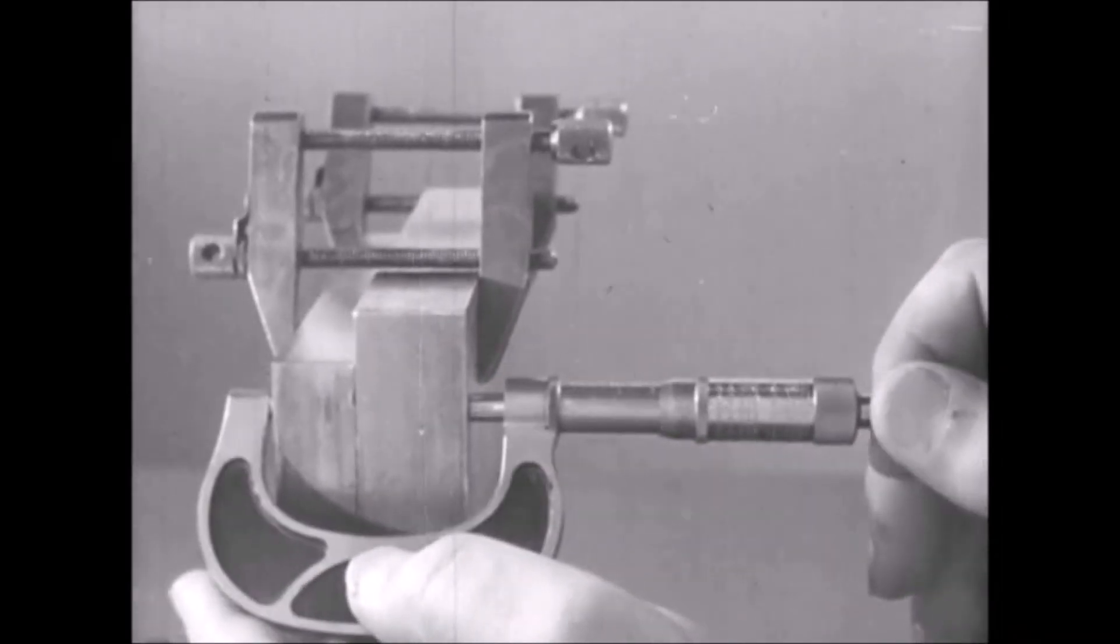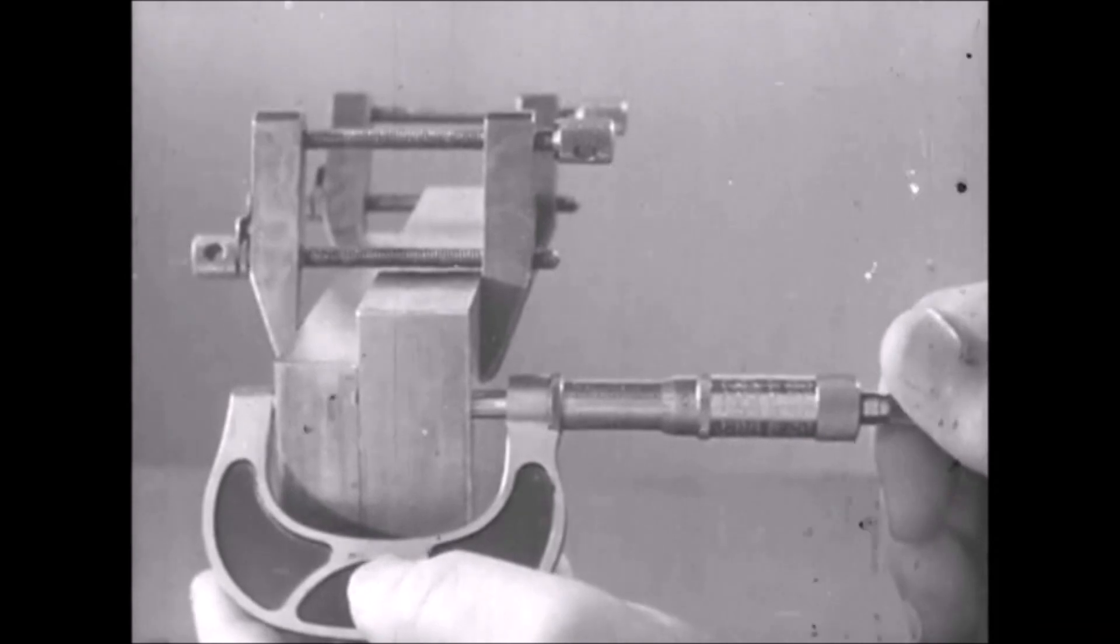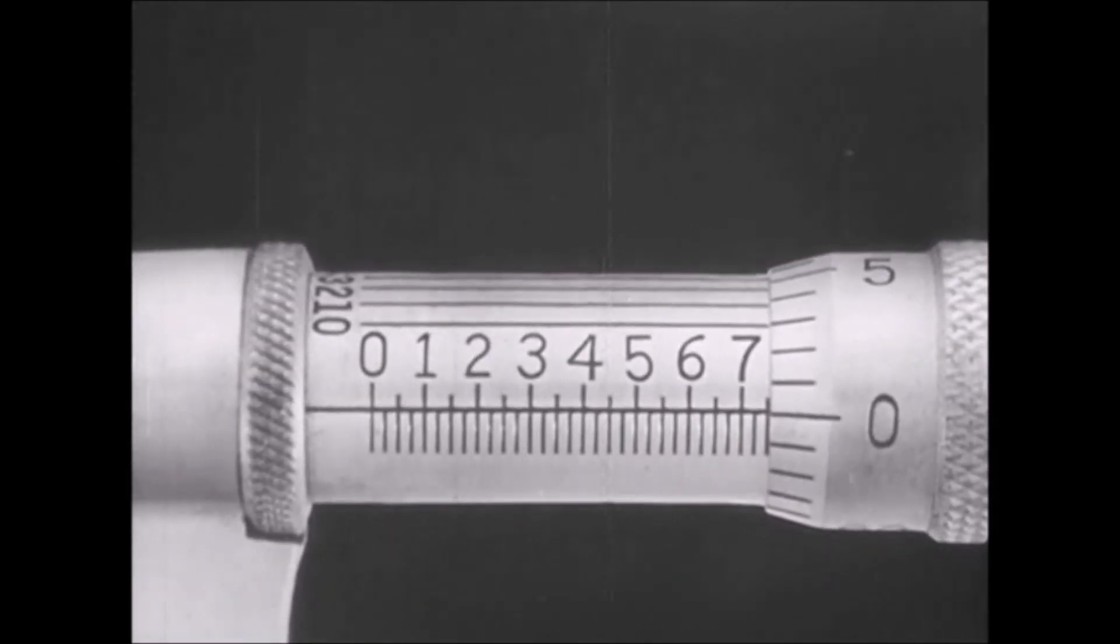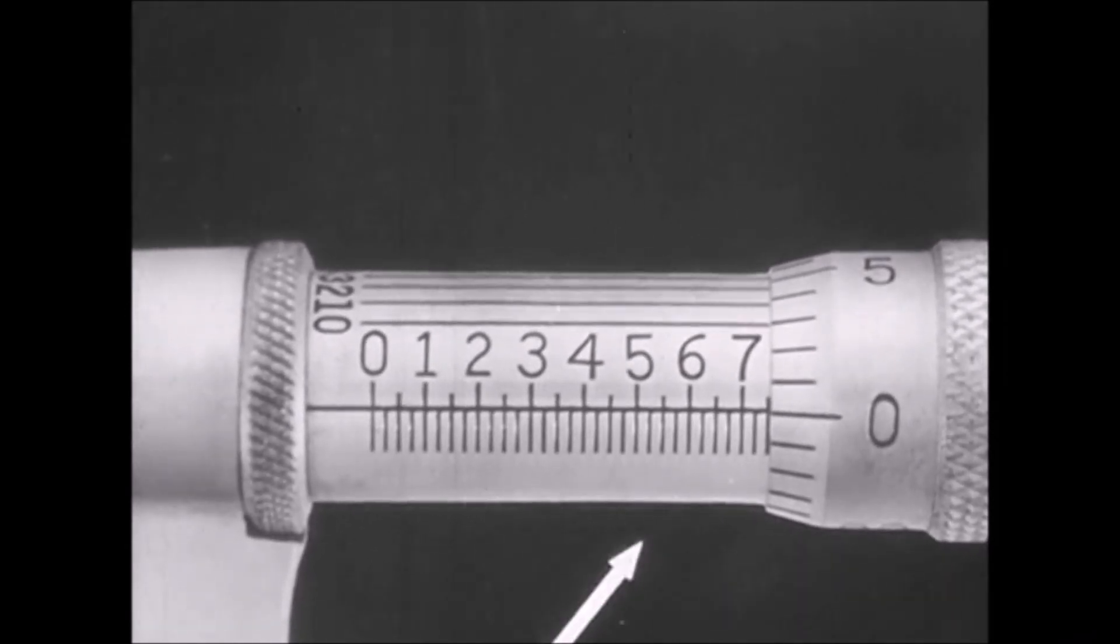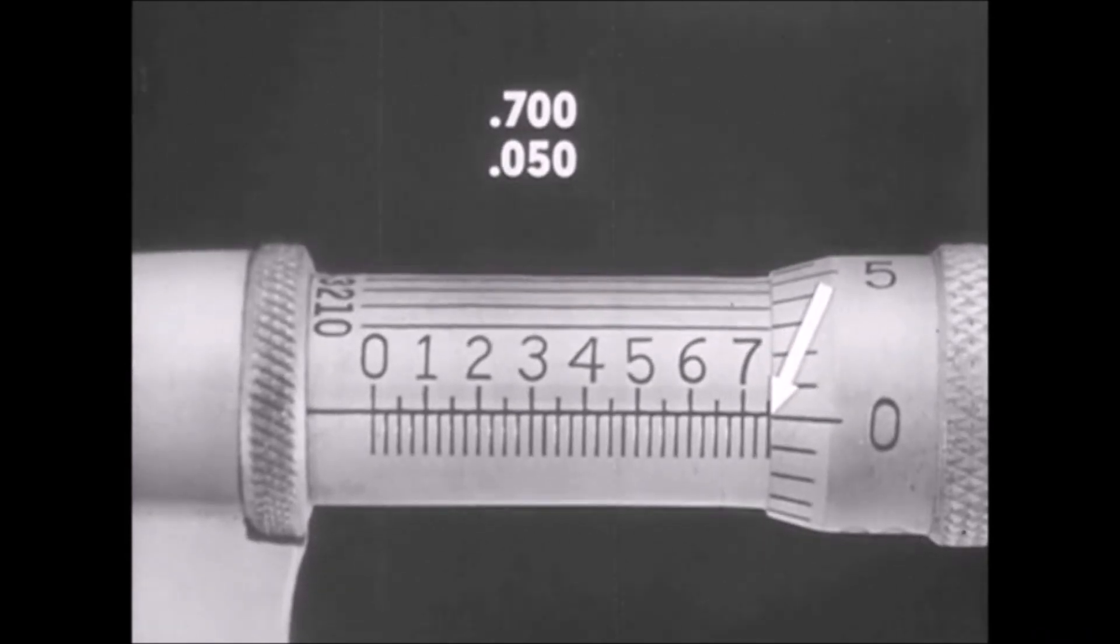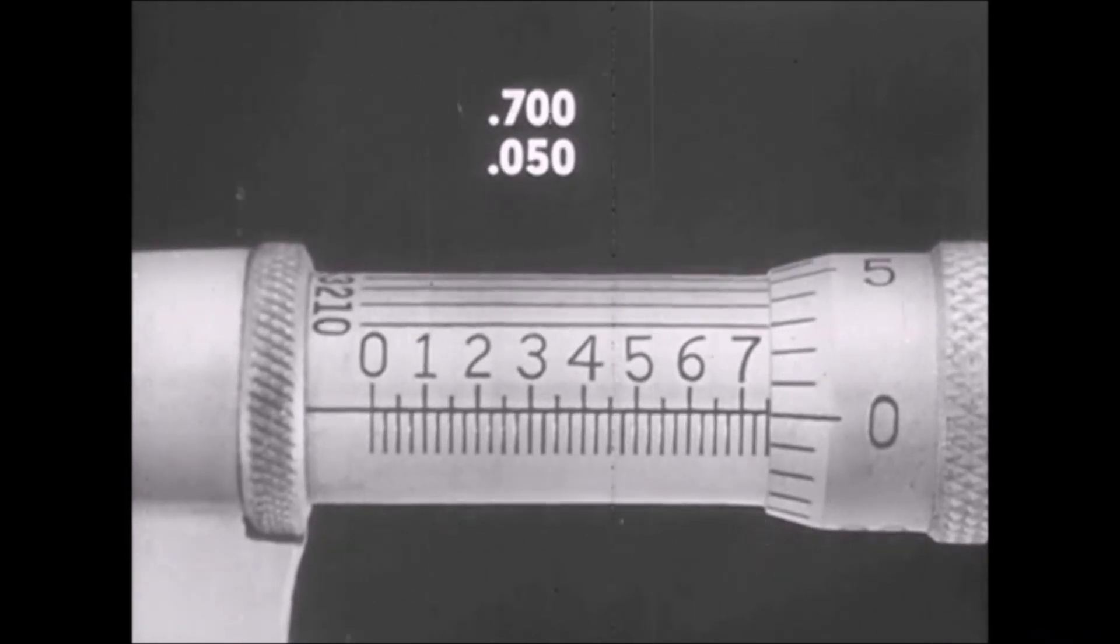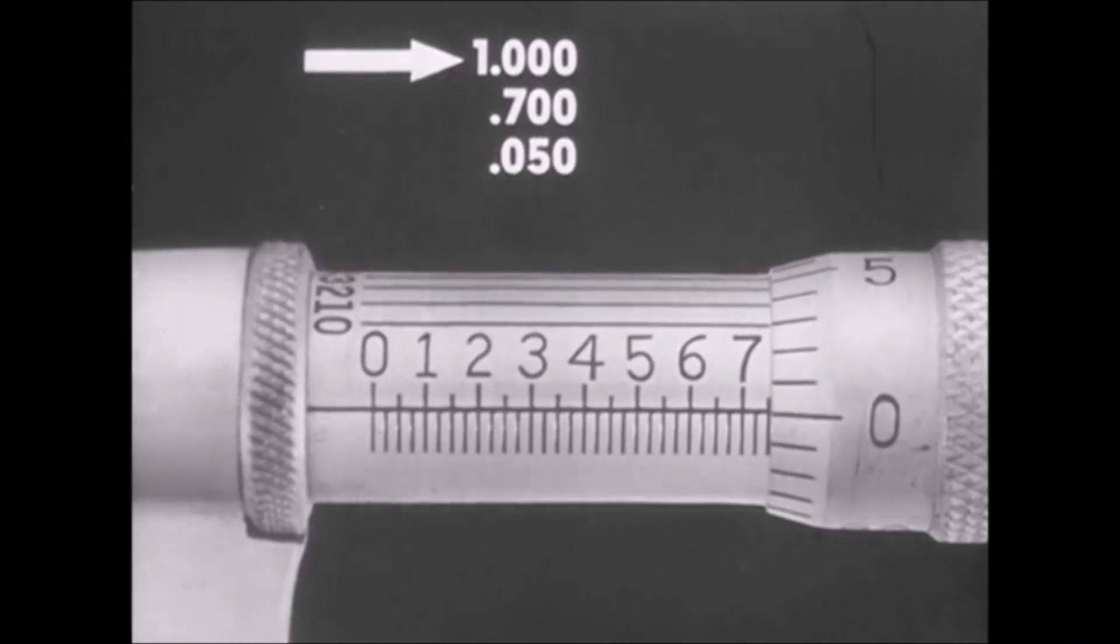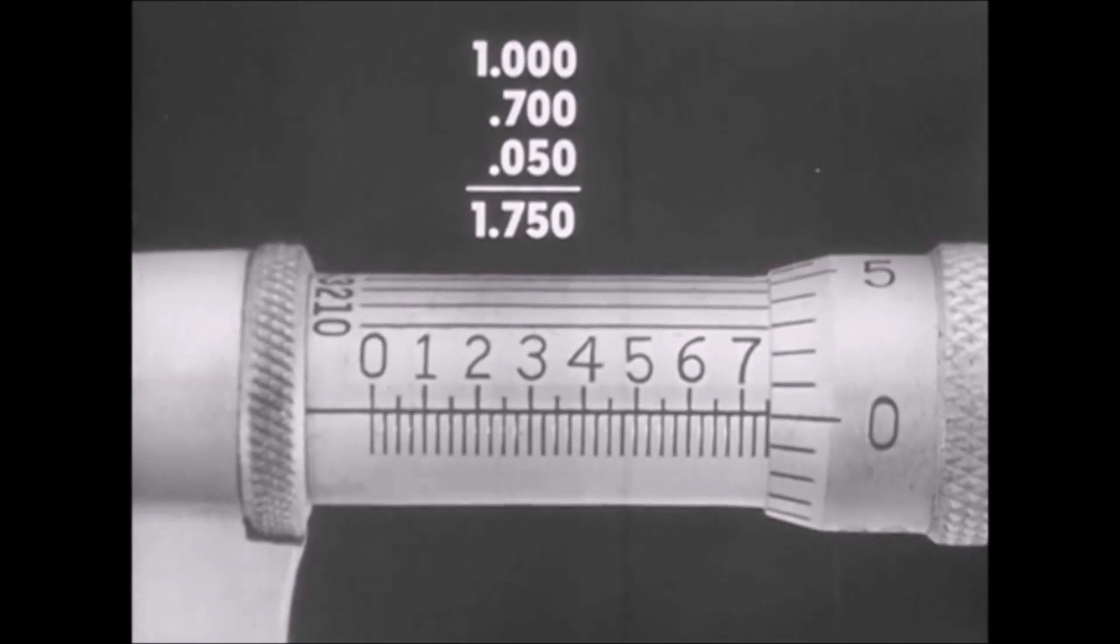Micrometers are often used in measuring two or more thicknesses of material. Since the combined thickness here is more than one inch, a two-inch micrometer is employed. The figure that appears on the barrel scale is .700. Then two full graduations of .025 each. That's .50. The zero on the thimble scale is exactly on the index line on the barrel. Remember, a two-inch micrometer is being used, so one inch must be added. The total is 1.750.